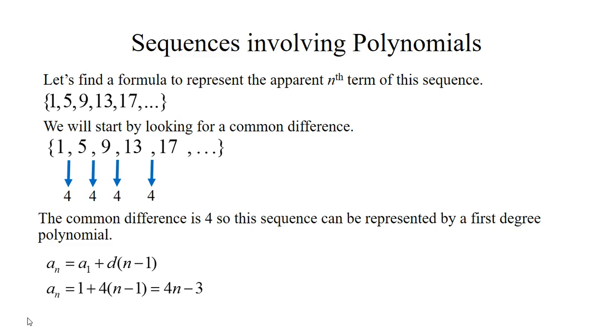We can check and make sure this works. If we plug in 5, that would give us the fifth term of the sequence. So 4 times 5 minus 3 gives us 17, so it appears to work for this sequence.